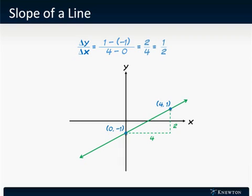Using the formula (1 - (-1)) = 2, that's the change in y, over (4 - 0) = 4, that's the change in x, gives us 2/4 or 1/2, so the slope of this line is 1/2.